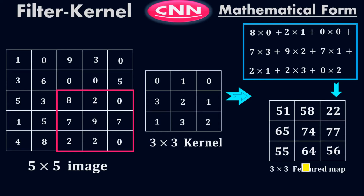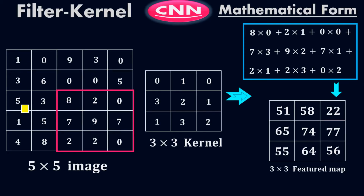This final map is called the feature map, also called the featured matrix. We have reduced the original dimension of the image from five by five down to three by three by applying the three by three kernel filter. Now, this movement where we leave a column and start from the next position is called a stride. If stride equals one, you leave one column or one row. If stride equals two, you leave two columns or two rows. The kernel size determines how large a patch you pick from the image.